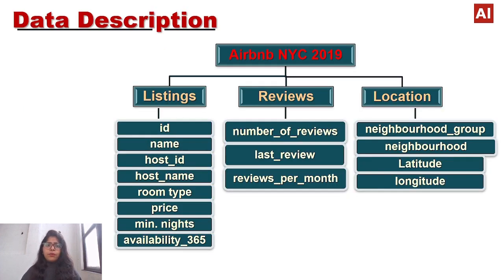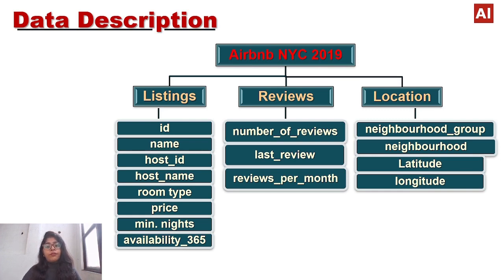We will now discuss the data description. In Airbnb data, we will be working on listings, reviews, and location. In listings, it tells us about the host ID, room type, availability 365, price, and more. In reviews, it tells us about guest reviews — specifically number of reviews, last review date, and reviews per month. For location, the attributes are neighborhood group, neighborhood, latitude, and longitude.